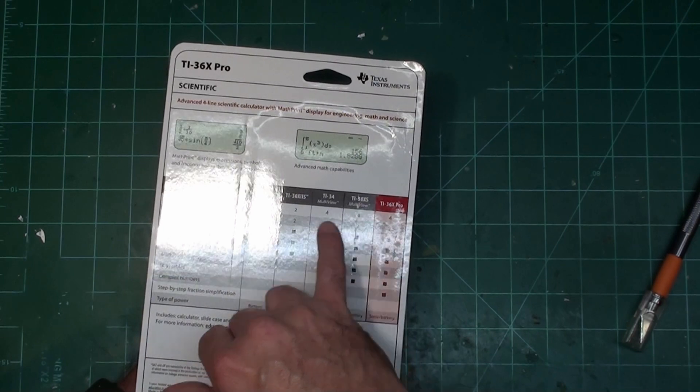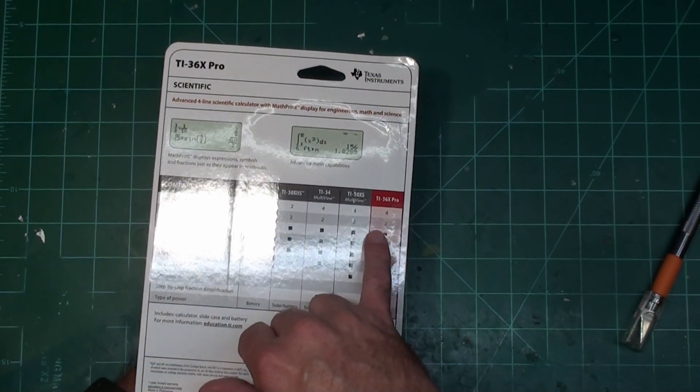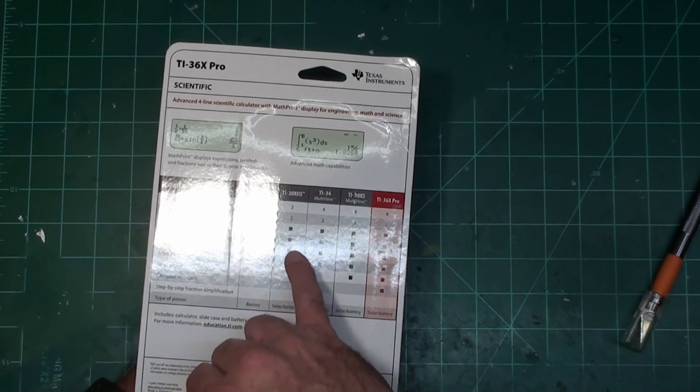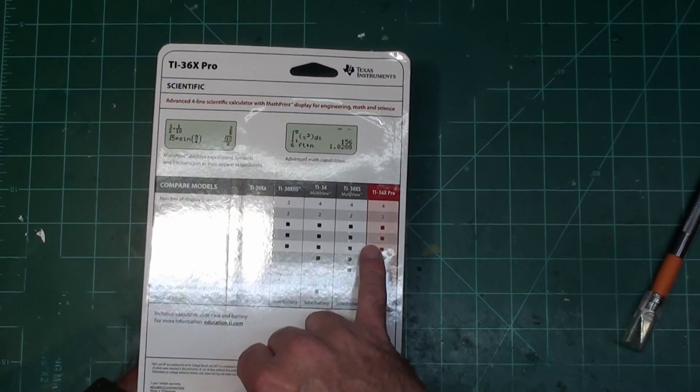Some of the TI-30s have four. One variable, two variable statistics - some of the TI-30s do two variable. Fraction, decimal conversion, they all do it. Trig, log, exponents, they all do it.